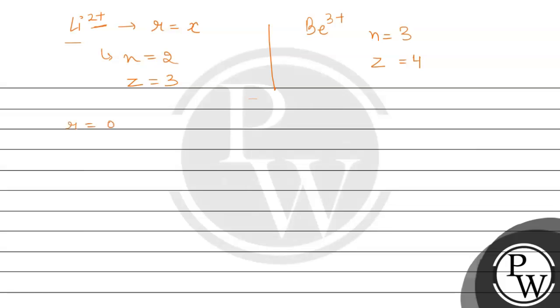r is equals to 0.593, n² which means 2², divided by z, that is 3. So it will be 0.593 multiplied by 4 divided by 3, and this value is in angstrom.